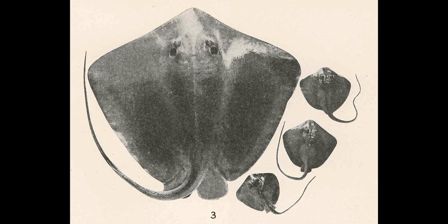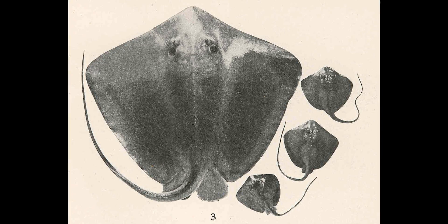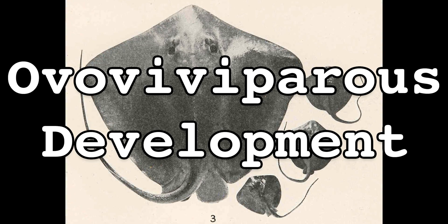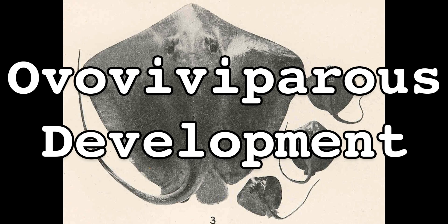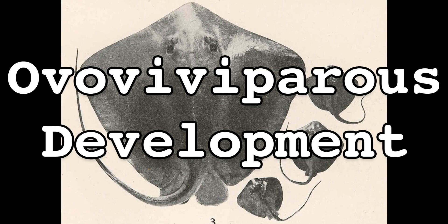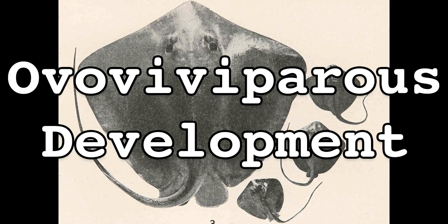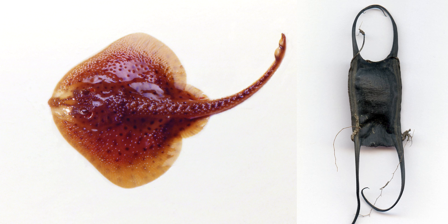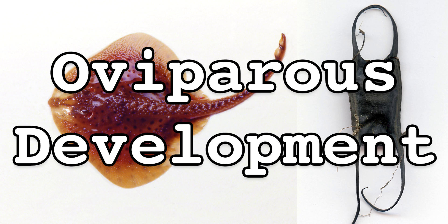The final difference between skates and rays that we're going to look at today is a bit more difficult to see, unless you're lucky enough to observe one giving birth, which seems intrusive. Stingrays give birth to live young in a process called ovoviviparous development, in which eggs develop and hatch inside the mother's body, resulting in a live birth. Skates, on the other hand, undergo oviparous development, with eggs developing and hatching outside the mother's body.